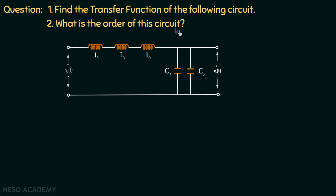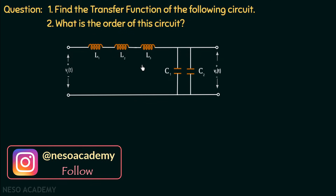We are given a circuit in which three inductors L1, L2, and L3 are connected in series, and two capacitors C1 and C2 are connected in parallel. The input voltage vi(t) is given to the circuit and the output voltage vout(t) is measured across the capacitors. We need to find the transfer function and calculate the order of this circuit.